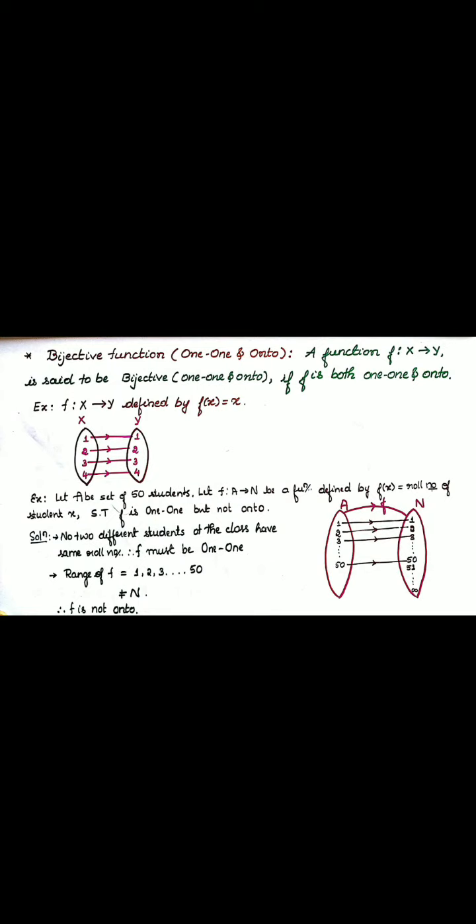Onto function check. All elements in codomain have pre-image, as defined in onto definition. That is also true. Image of one is one, image of two is two, image of three is three, and image of four is four. So this particular function is called a bijective function.